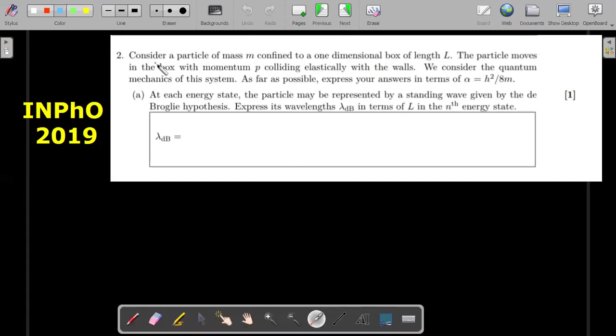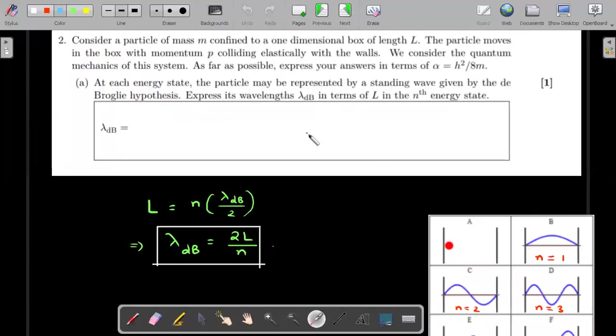Now assuming that you have already paused and tried this particular question, let me go ahead with the formal wording of the question. Consider a particle of mass m confined to a one dimensional box of length L. The particle moves in the box with momentum p colliding elastically with walls. We consider the quantum mechanics of this system. As far as possible, express your answers in terms of alpha, which is h squared by 8m.